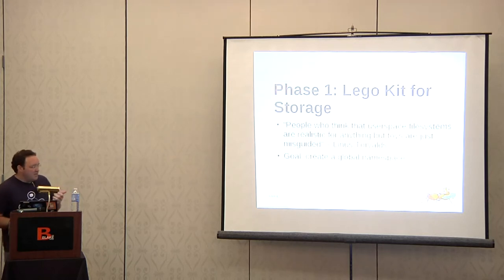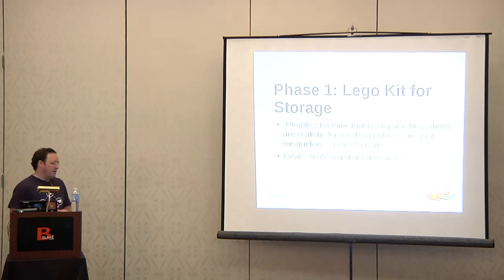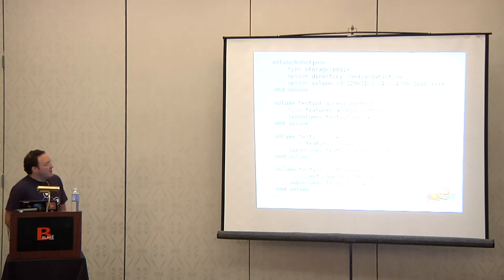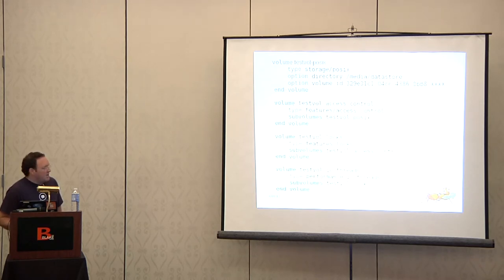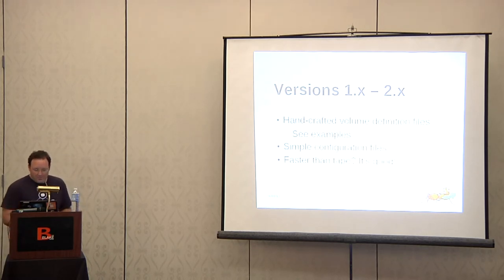Gluster will expose NFS — it has effectively its own NFS implementation that you can mount. That is still slower than their FUSE client. So if you mount it via FUSE, you actually get better performance. You can see specifying some of the Gluster volumes and turning on different features including performance options. This is a quick show of how, at least originally, this was done. You used to have to do handcrafted definition files for your volumes. The performance was faster than tape and people thought that was good.